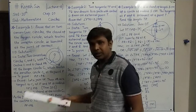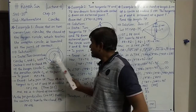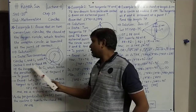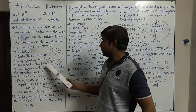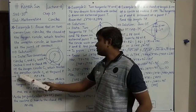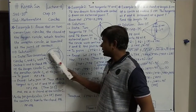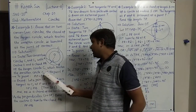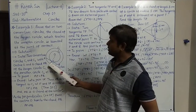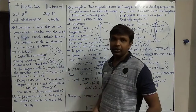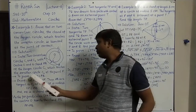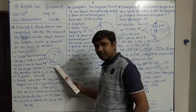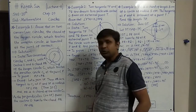In the solution, we first write the given data: two concentric circles C1 and C2 with center O, and a chord AB of the larger circle C1 which touches the smaller circle C2 at point P. To prove: AP equals PB.